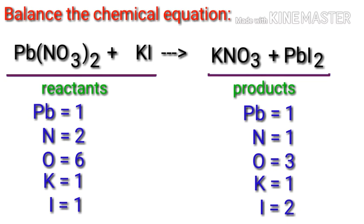Looking at this equation, we can see that it is not balanced. On the reactants side there are one plumbum atom, two nitrogen atoms, six oxygen atoms, one potassium atom, and one iodine atom. On the products side there are one plumbum atom, one nitrogen atom, three oxygen atoms, one potassium atom, and two iodine atoms.